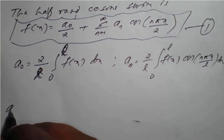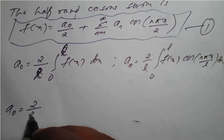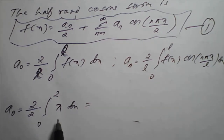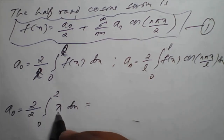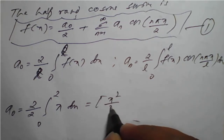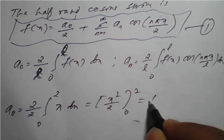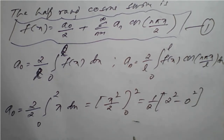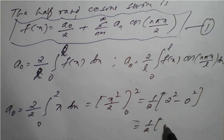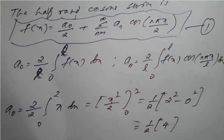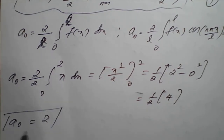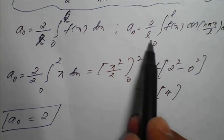Computing a₀: a₀ = (2/2) times the integral from 0 to 2 of x dx = [x²/2] from 0 to 2 = (1/2)(2² − 0²) = (1/2)(4 − 0) = 2. Therefore, a₀ = 2.